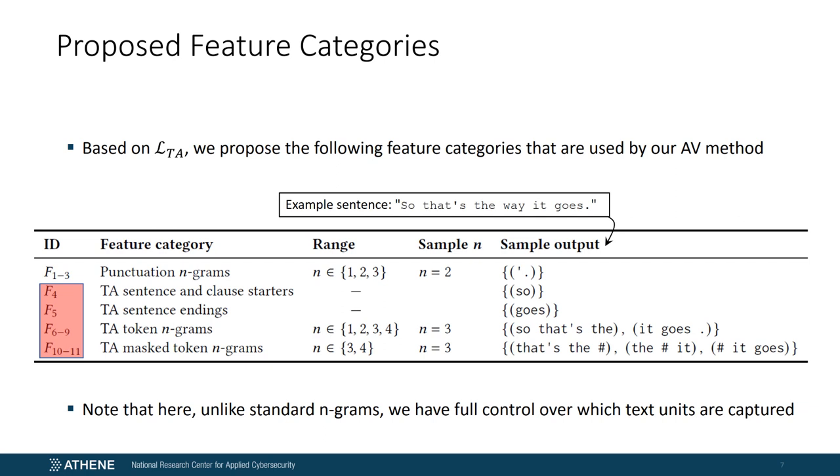The two feature categories, TA sentence and clause starts, and TA sentence endings, focus on words and phrases that appear at the beginning of the sentence or clause and at the end of the sentence. One restriction here is that they must be contained in LTA, so that here the resulting features are SO and GOES. The feature category TA token n-grams are similar to standard token n-grams with the restriction that the underlying text units are either punctuations or single words that appear in the list LTA. The resulting features here are SO that's THE and IT GOES.